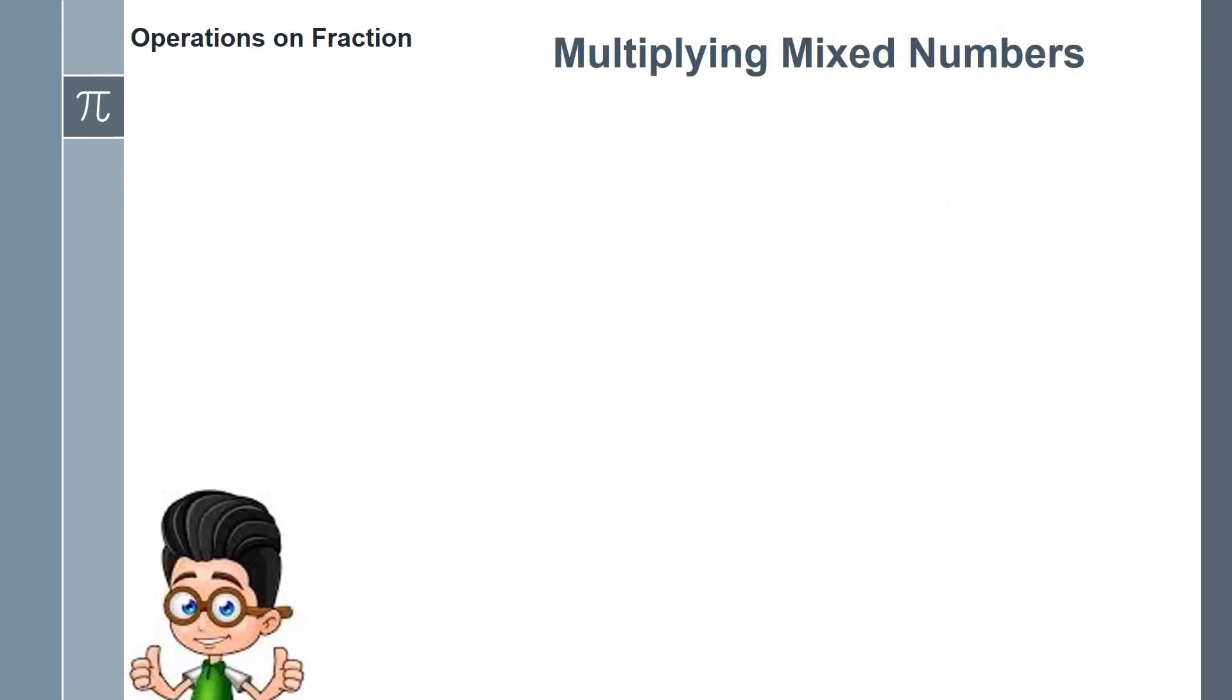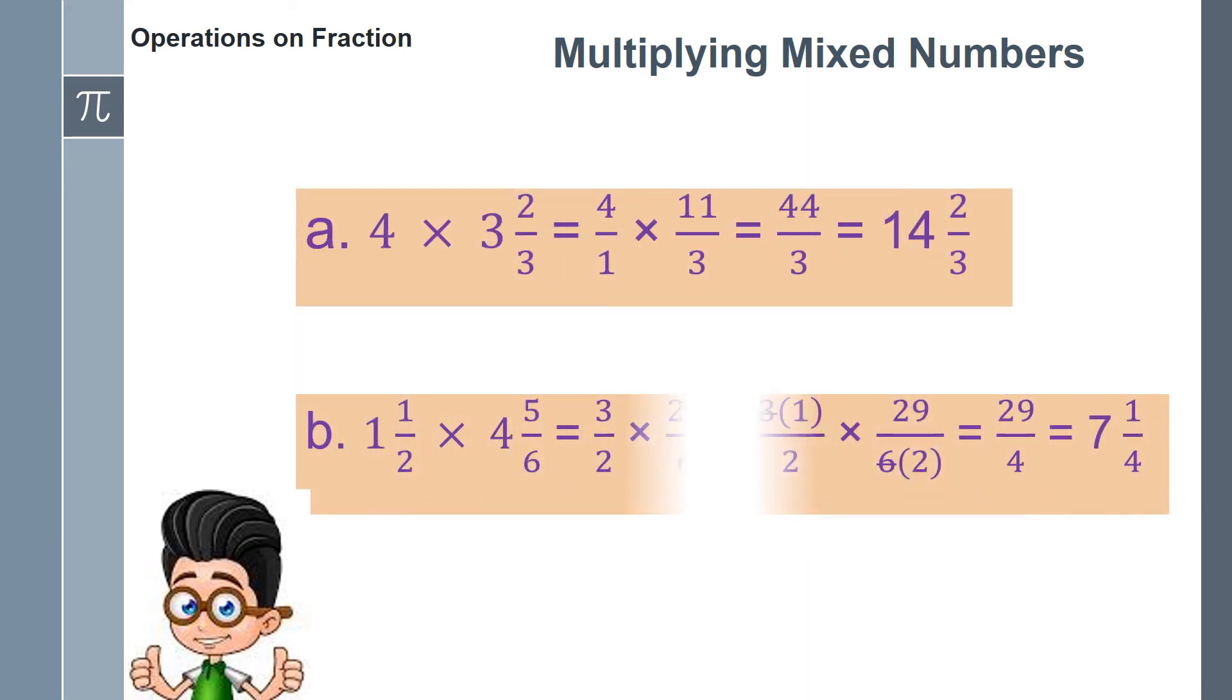To multiply mixed numbers, change first the mixed numbers to improper fractions, then multiply them as ordinary fractions using cancellation if possible. Then, change the final product to a mixed number and reduce the fraction to its lowest terms.